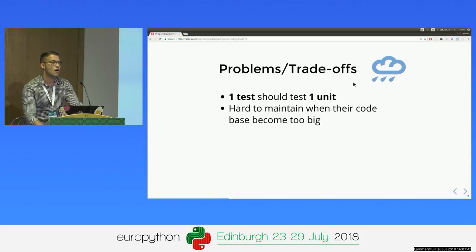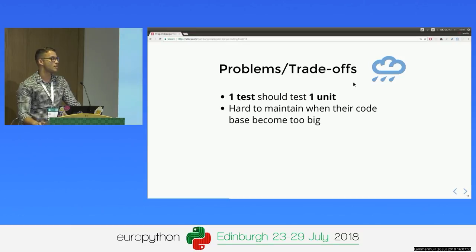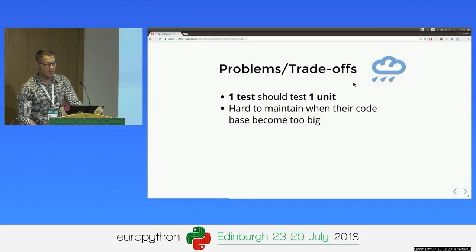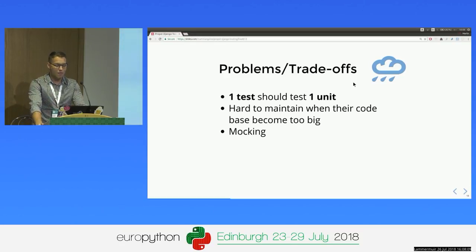When our project gets bigger, our test code becomes larger and it can be hard to maintain. I'm sure all of us have ever had a randomly failed test in CI and that's why you can't push to production. Mocking, which is the main part of the unit test, can be a disadvantage because it may lead you into a regression and cover some nasty bugs.